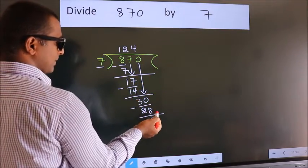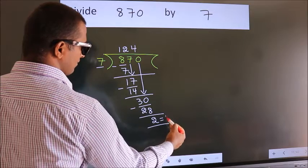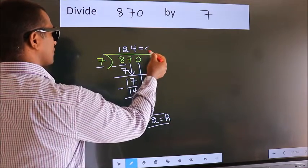No more numbers to bring down, so we stop here. This is our remainder, and this is our quotient.